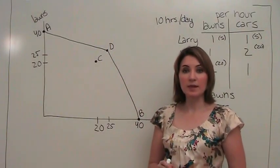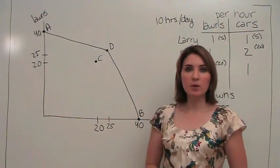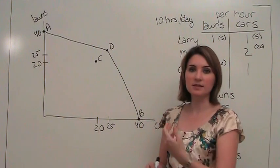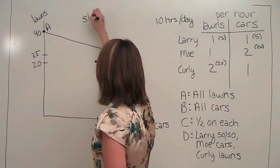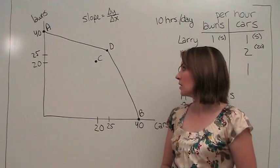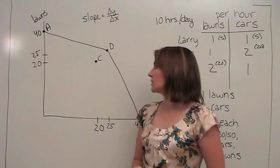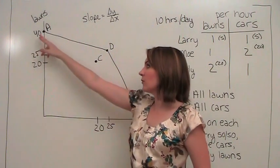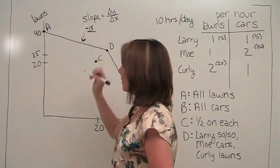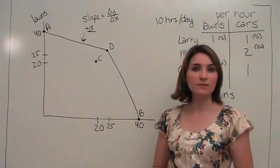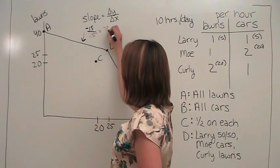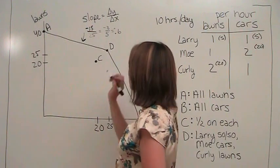Let's think about some features in this graph. The first thing we want to think about is the slope at each part of the production possibilities frontier. If you recall, the slope of a line is just the change in vertical distance, or the y variable, over the change in horizontal distance, or the x variable. If we're looking at the part of the line between points A and D, our y variable went from forty to twenty-five for a change of negative fifteen. And our x variable went from zero to twenty-five for a change of twenty-five. We're left with a slope of negative point six.